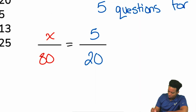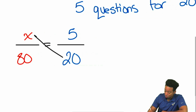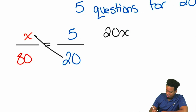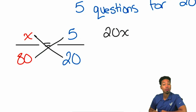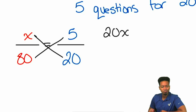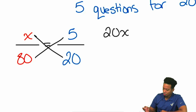We'll go ahead and go with X times 20 — that'll end up being 20x. And then we have 80 multiplied by 5. 80 times 5 is what? 400.